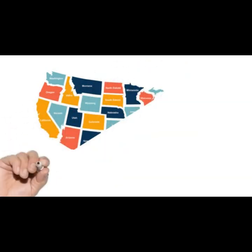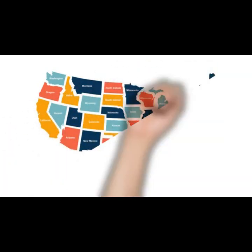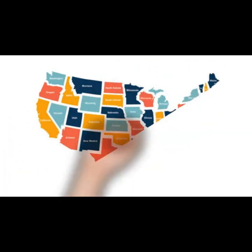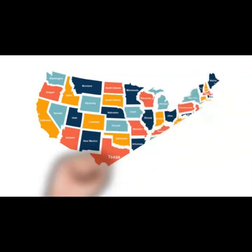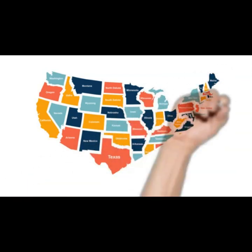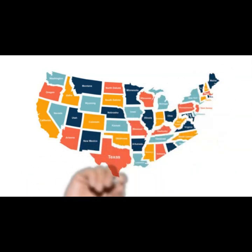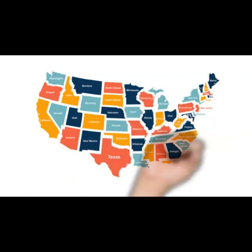Do you see anything curious when you look at the different shapes of the states? What kind of lines do you see? Is there anything different between the east and the west states? If you look closely at your state, what do you think you'll find at the border?